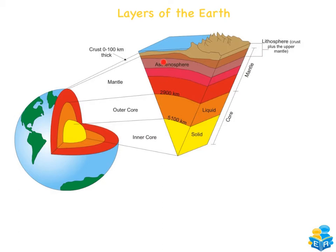Part of the mantle is known as the asthenosphere, which is the top part of the mantle. The rocks in the asthenosphere are much weaker and almost molten — they can easily change and are capable of flowing. This is where convection currents occur, which explains why the tectonic plates are able to move.